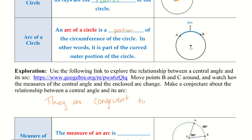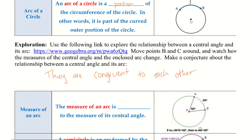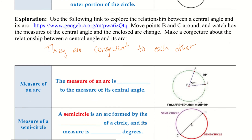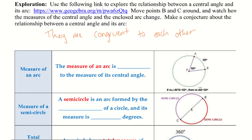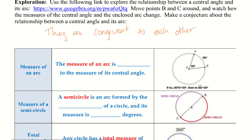They are congruent to each other. Let's go ahead and fill out their definition: the measure of an arc is congruent to the measure of the central angle.